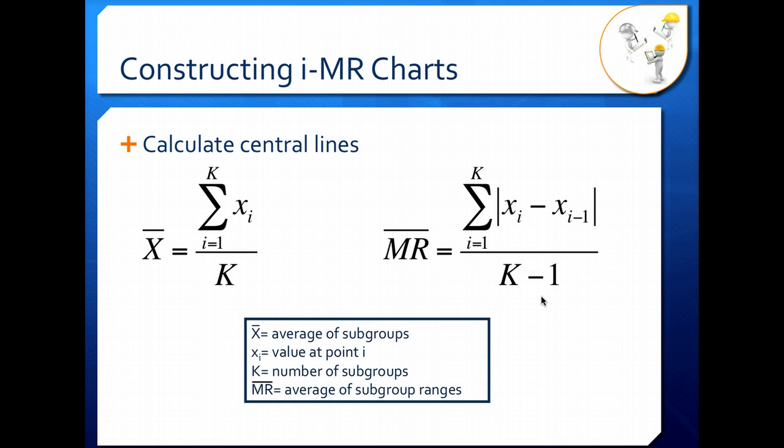Your MR average or your range average is MR bar. And this is calculated a little bit differently. Let's take a look at this formula. So here we see XI minus XI minus 1. What that means is that you need to wait until you have at least two points to start calculating a range. Makes sense. You need to tell the difference between one point and another. You can't do that in one point.